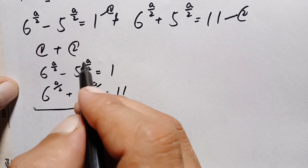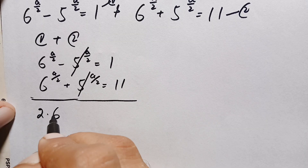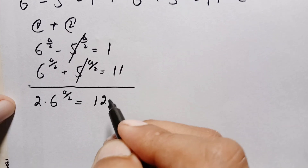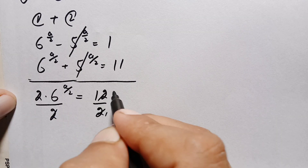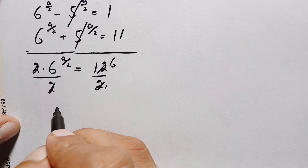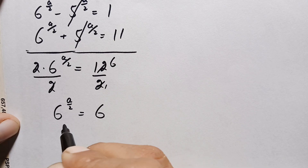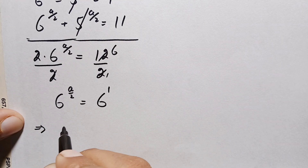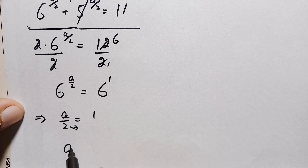By adding these two equations, the negative 5 raised to power (a/2) and positive 5 raised to power (a/2) cancel out. This gives 2 times 6 raised to power (a/2) equals 1 plus 11, which is 12. Dividing both sides by 2, 6 raised to power (a/2) equals 6. So a/2 equals 1, which means a equals 2.